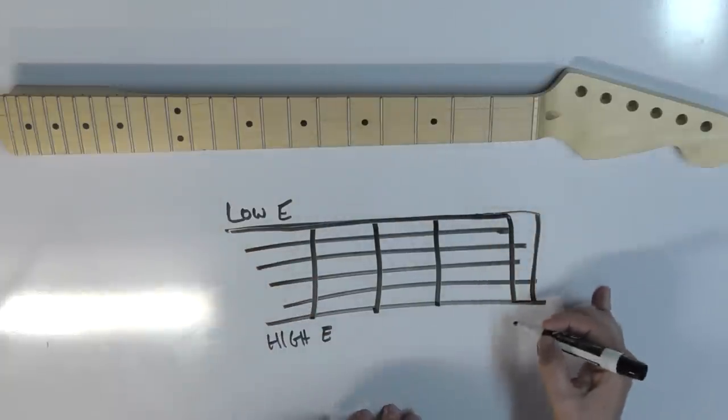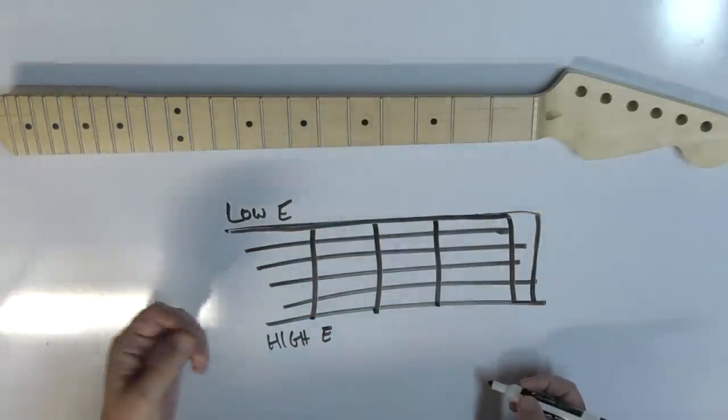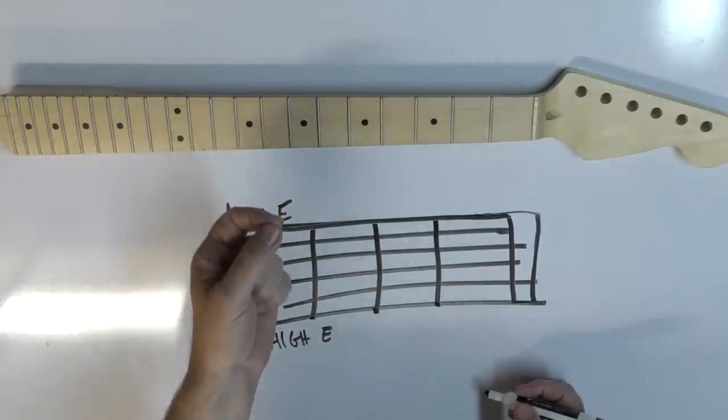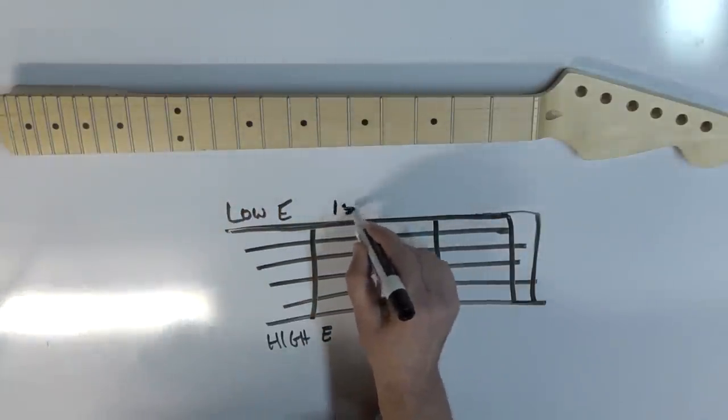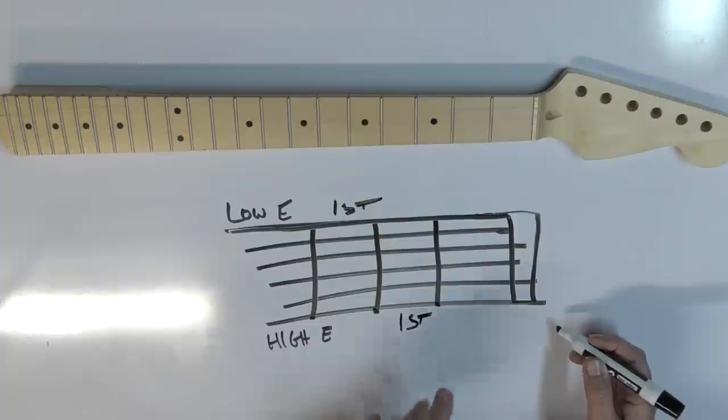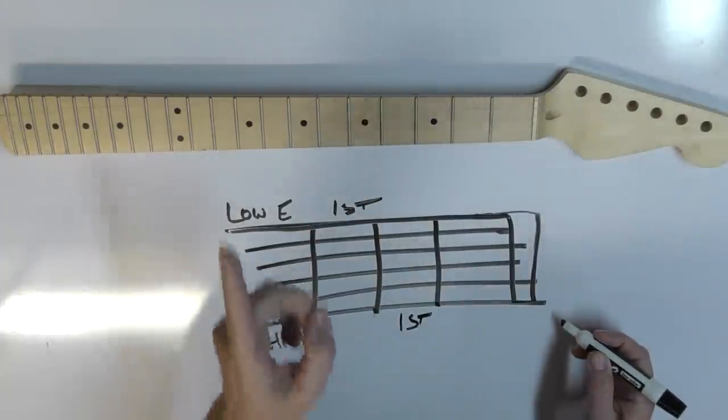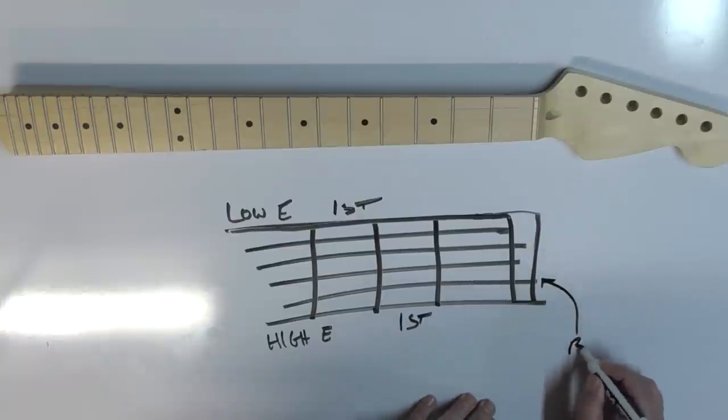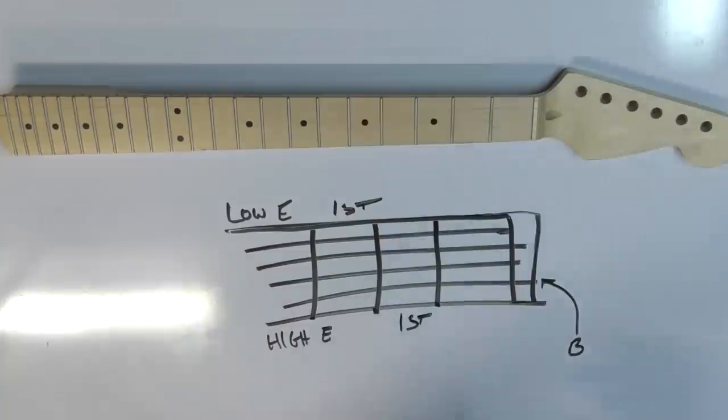When people see this, they go, oh, it's a circle of fourths. Not really. It's the circle of fifths. This is not the first string. This is what is considered the first string down here, the high E. But truth be told, the first string is this guy right here, the B string. That is what you should consider the first string. And I'm going to explain why.